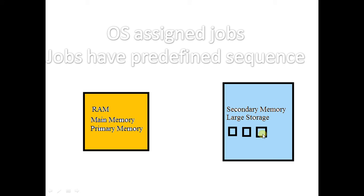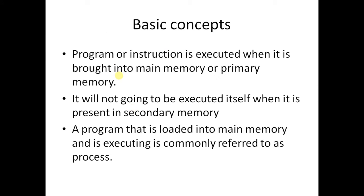Here you can see small blocks — these are just programs or instruction codes, and this is RAM, the random access memory, also called main memory or primary memory. Every data or instruction which is to be executed must first be brought into RAM or primary memory in order to execute it.